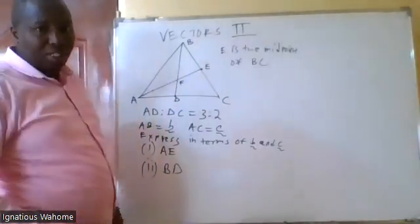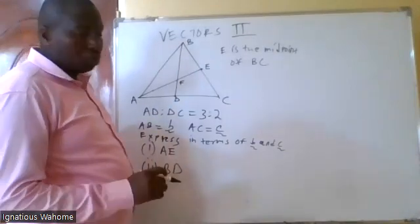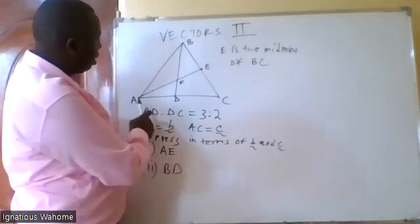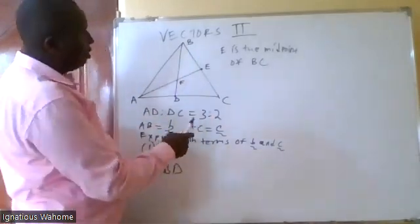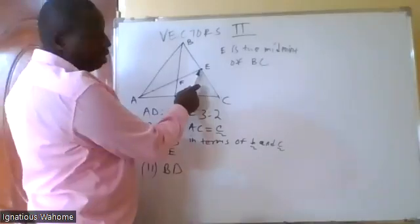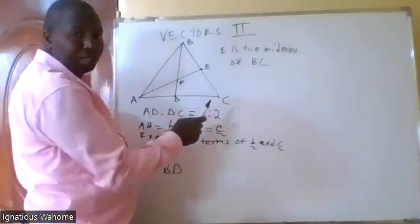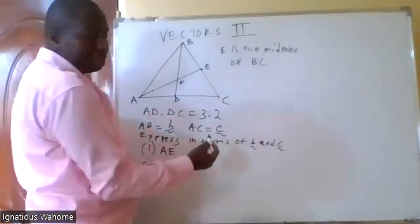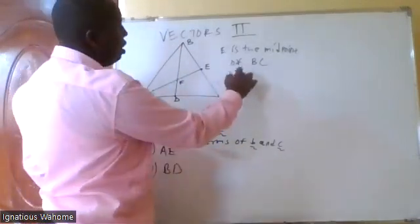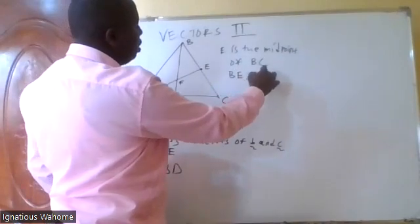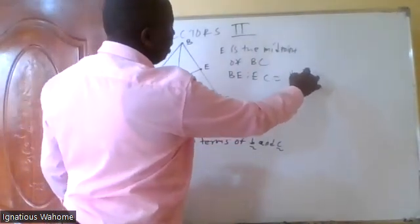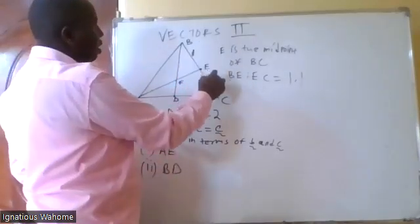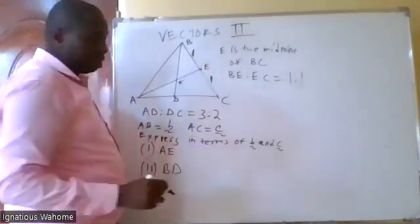The question on vectors 2 is provided here. You are given triangle ABC where E is a point on BC such that E is the midpoint of BC. If E is the midpoint, then the ratio BE to EC equals 1 to 1 — that's the simplest ratio, so this is 1 and this is 1.